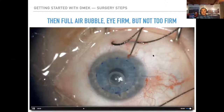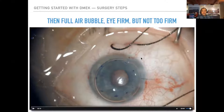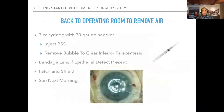After centering, fill the eye with air. You don't have to fill it as firm as DSAEK — maybe pressure in the 30s, not 40. The patient goes to the post-operative area and lays flat for 45 minutes. Then we go back to the OR and use a 3cc syringe with a 30-gauge needle to remove enough air to clear the inferior iridotomy. Put a bandage lens if needed, patch the eye, and they lay flat all night.